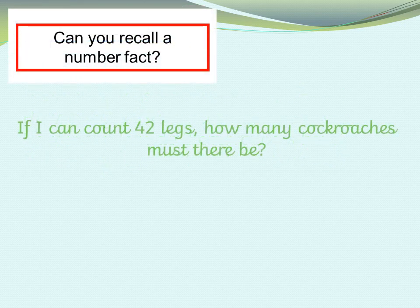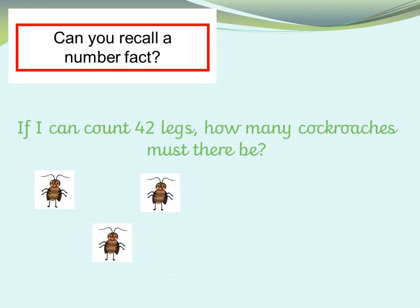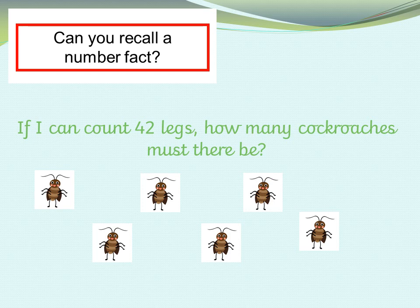So if I can count 42 legs, how many cockroaches must there be? You might still have your times tables written out in front of you, so you're looking for 42 and finding out how many sixes there are in there. Well we've got six, 12, 18 — so it can't be three cockroaches. Six sixes are 36, so we haven't got to 42 yet. Seven — if you wrote seven cockroaches, then you are correct.